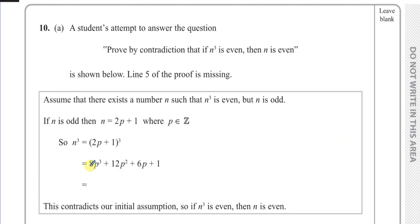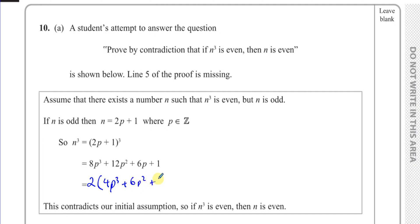If you cube (2p + 1), they've already done it for us — it gives you 8p³ + 12p² + 6p + 1. And this is the line we have to fill in. According to our wrong assumption, this number is going to end up as an even number — we've got an odd number, cubed it, and it should become even. However, we can see that this is not going to be an even number, because if you take the first three terms, two is a common factor of them. So we get 2(4p³ + 6p² + 3p) + 1. This is two times an integer — because if p is an integer, then 3p, 6p², and 4p³ are all integers, and their sum is an integer. Two times an integer gives you an even number, and you've got that even number plus one — so this is odd.